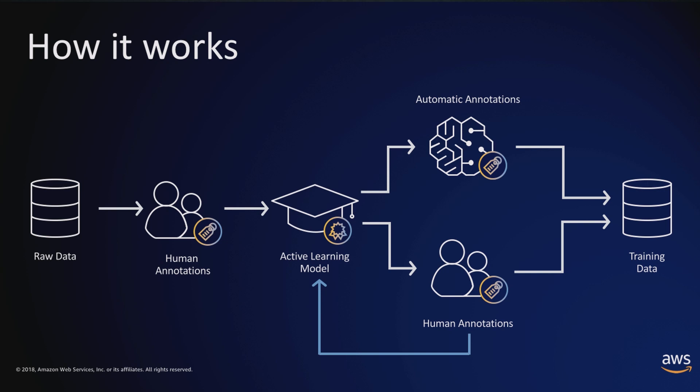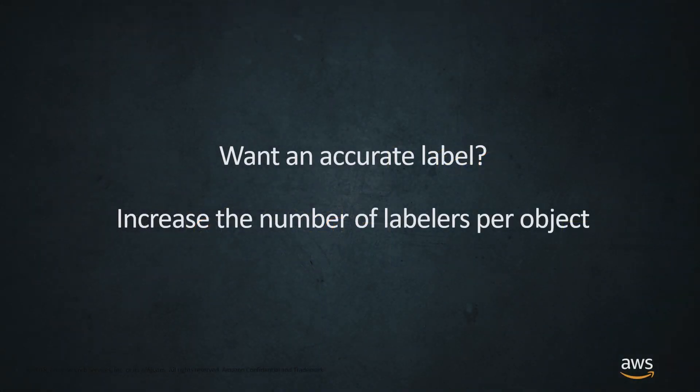With active learning, there's a model that's trained on your data. When the predictions from that model are above 80% confident, that is automatically considered training data — considered a label. If it's below 80% confident, it's sent over to actual humans who perform the annotation for you. So it's cheaper and it's an accelerator — you can move faster. And if you want your images to be accurately labeled, you can increase the number of labelers per object.